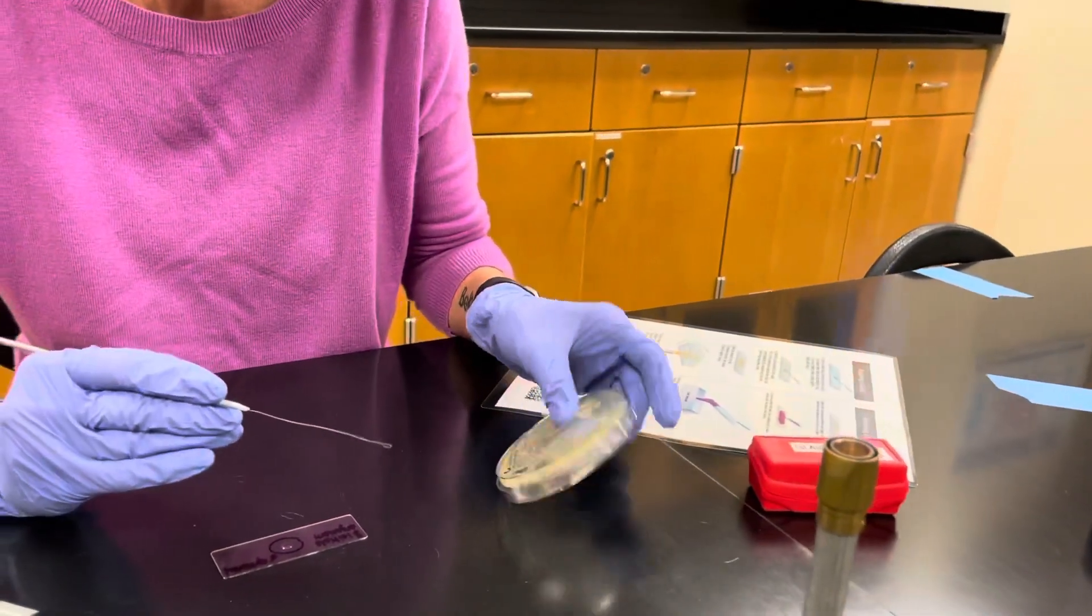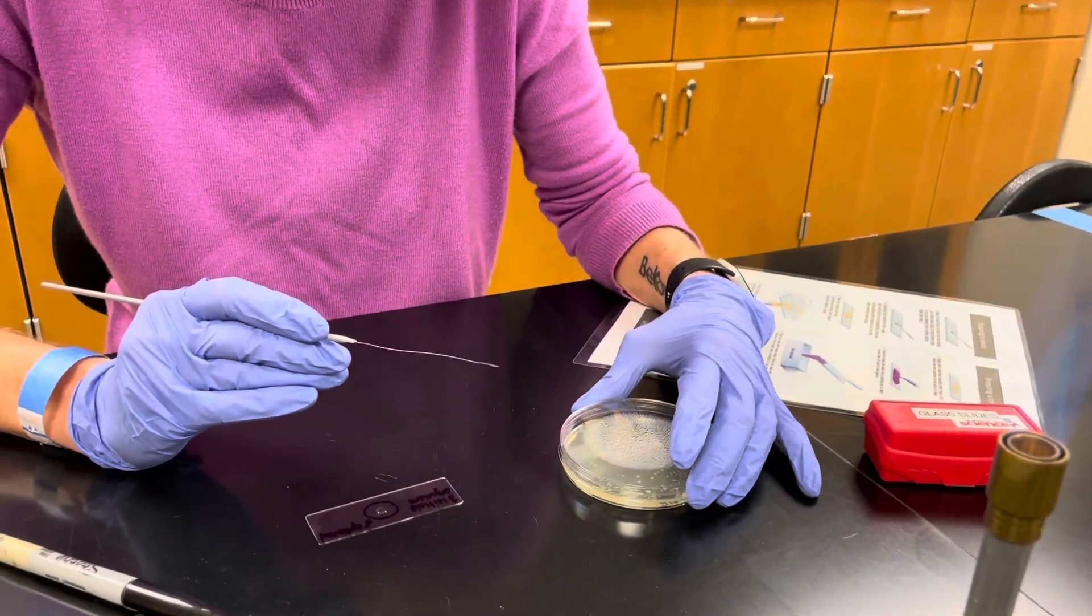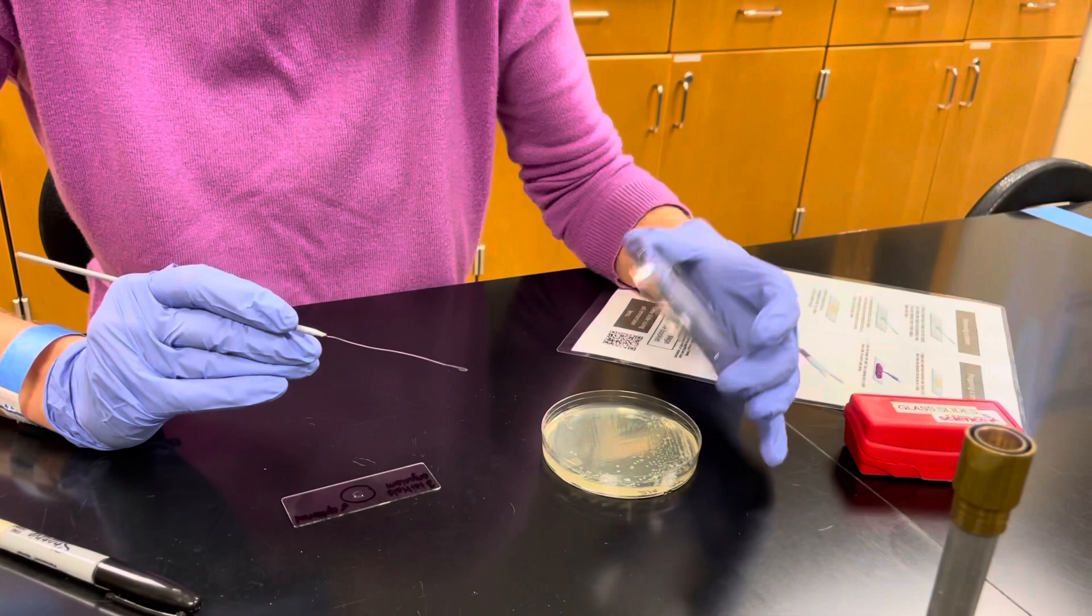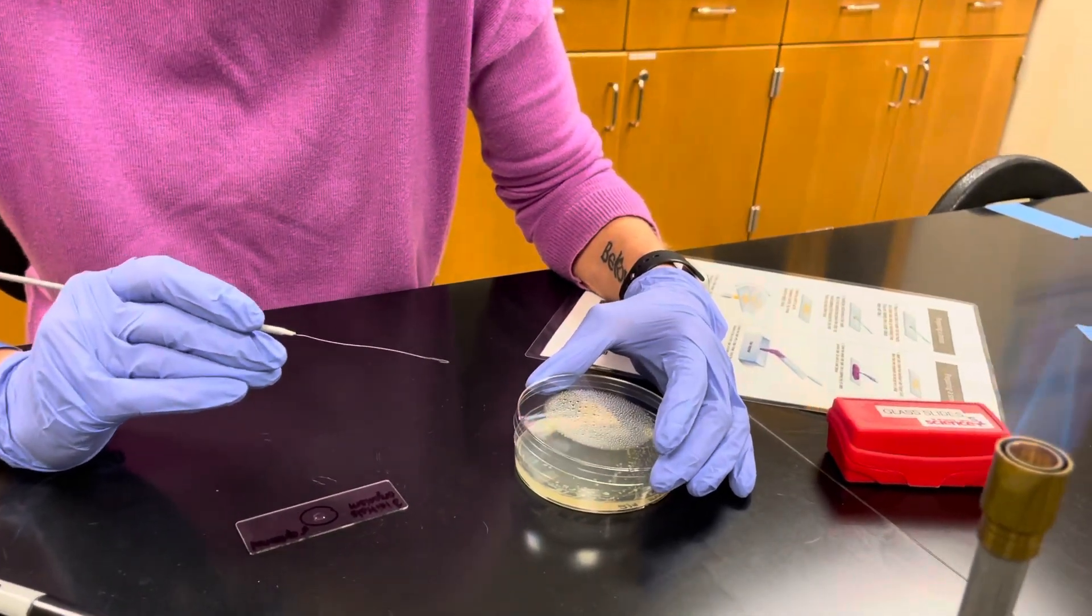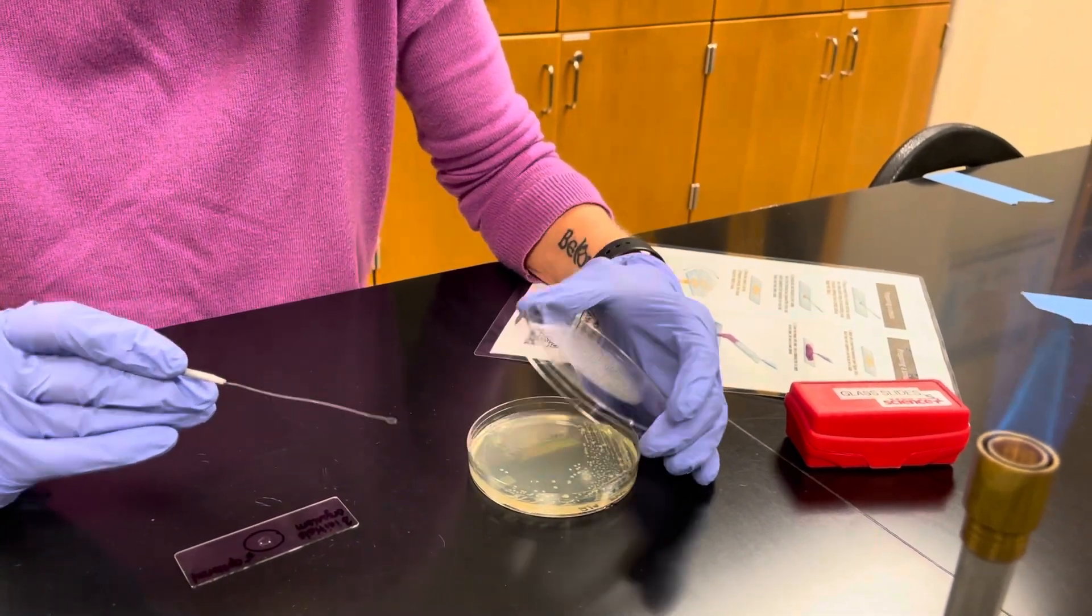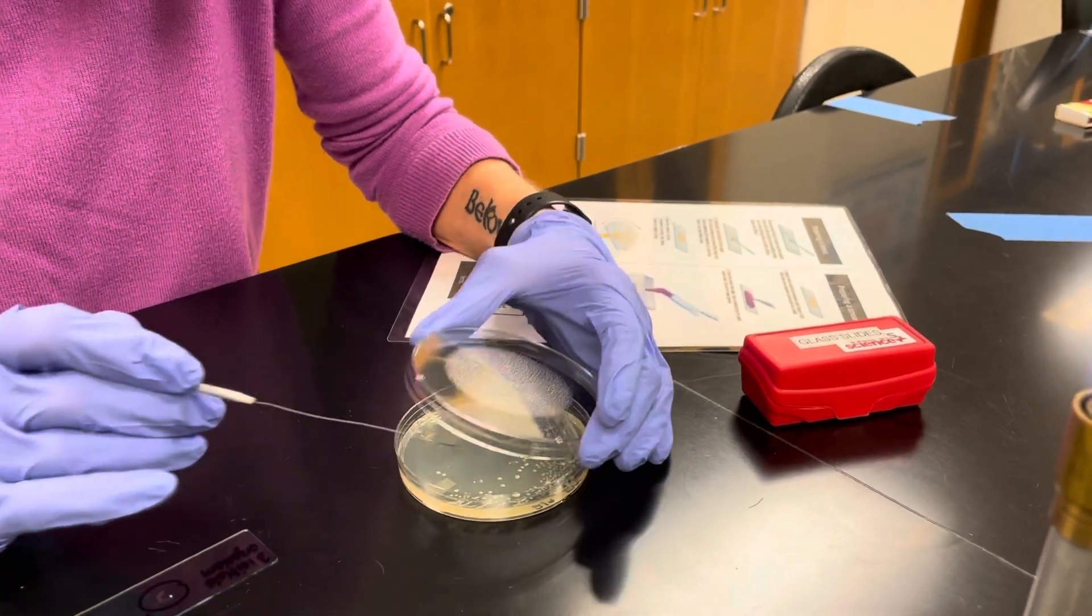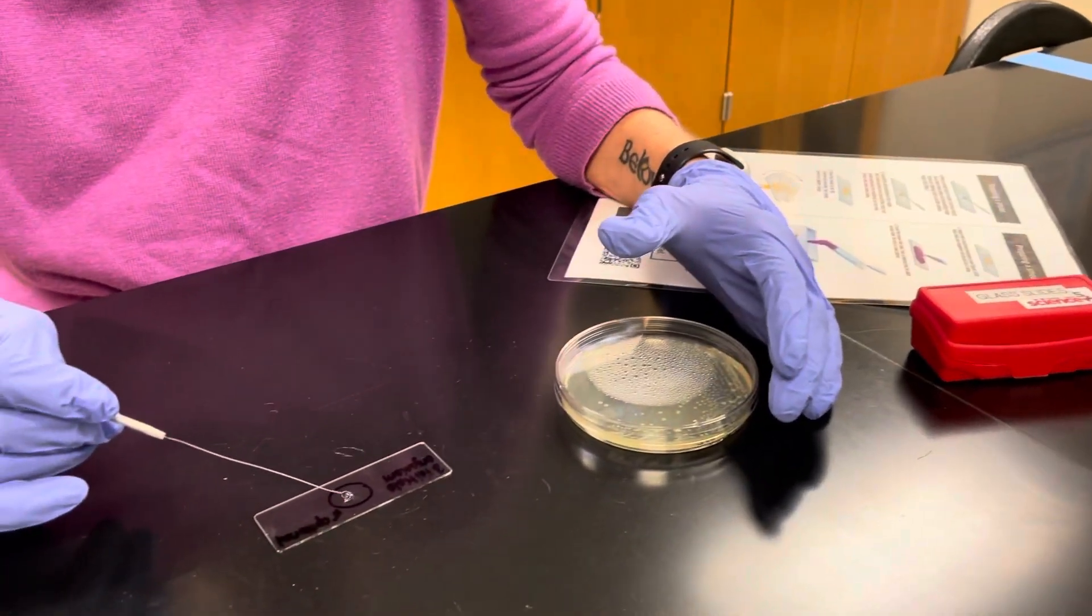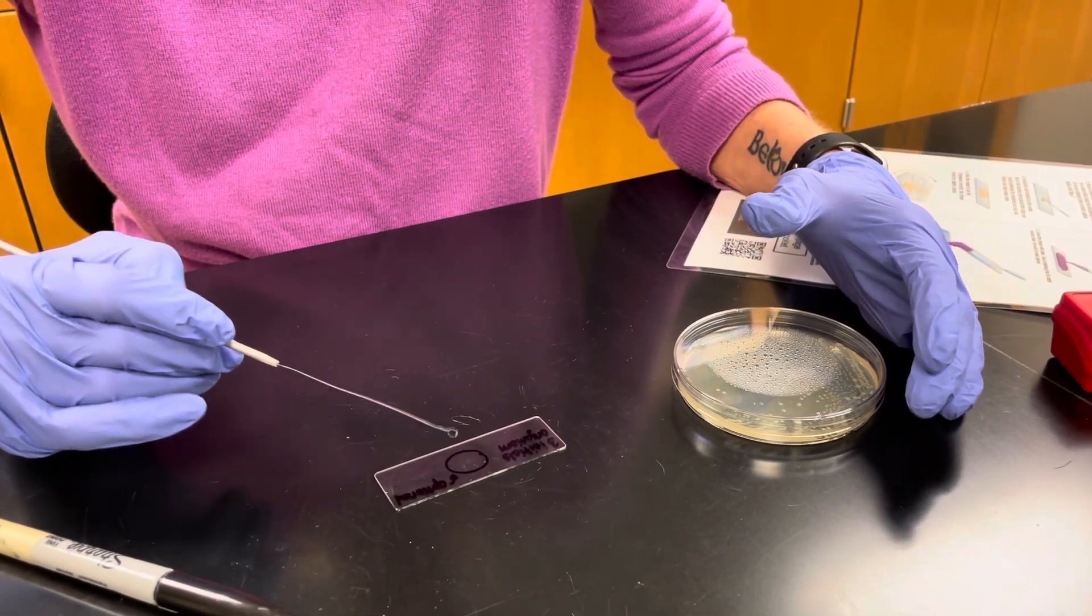And then we're going to go into our plate. We want to do this aseptically, so you use the lid as a shield. You never take the lid off and sit it on the lab bench. And we want to take the youngest cells. So you always take those from the edge of the colony. If your colony is very small, you can take the whole colony. So I'm going to take the edge of this colony and I'm going to stir that into that small drop of water and spread that out.